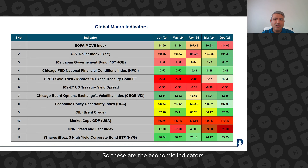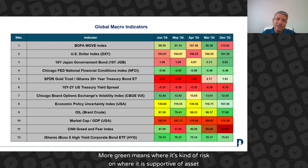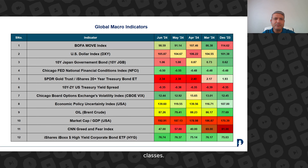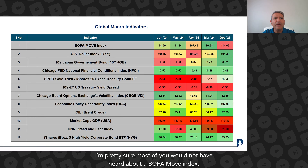So these are the economic indicators. Just some color coding — you would see some striking color over here. More red means it is a risk-off kind of thing where we are concerned. More green means it's risk-on, where it is supportive of asset classes. So let's start with the first indicator — the BOFA MOVE index.